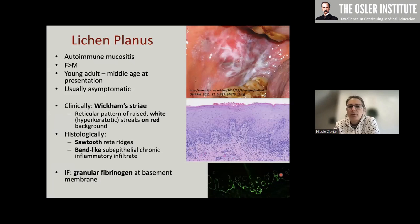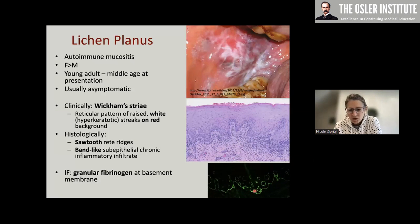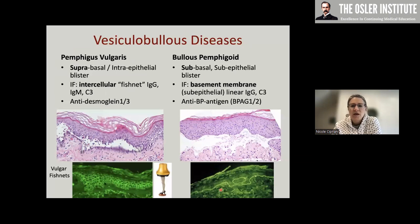Lichen planus is an autoimmune mucositis, mostly in adult females, with a classic pattern of white streaks on top of red patches — erythral and leukoplakic combined. On biopsy you see downward-pointing sawtooth rete ridges with a band-like subepithelial chronic inflammation. If your clinician is adept, they will sample this for immunofluorescence, where you'll see granular to linear deposition of fibrinogen at the basement membrane, which is useful in diagnosis.